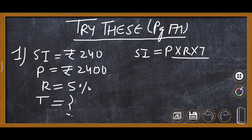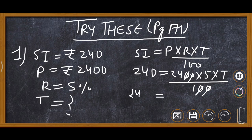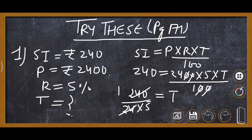The formula is: SI = (P × R × T) / 100. Substituting: 240 = (2400 × 5 × T) / 100. The two zeros cancel, and then 240 and 24 divide, and 5 also divides. So time T = 2 years.